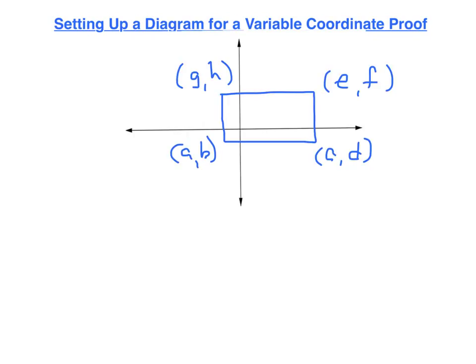This is an example of what you shouldn't do. Notice I've drawn a rectangle and I've attempted to give coordinates to each vertex. Notice how many letters I have. And also notice that there's nothing about the letters that would ensure that it ended up being a rectangle. I need to choose variable coordinates that ensure I have a rectangle. And the general rule of thumb is to use as few variables as possible. This is not a correct way to go about this problem.